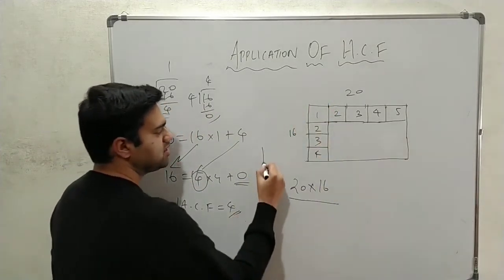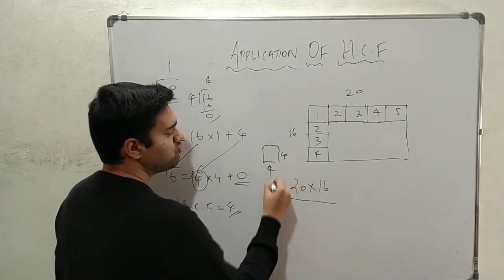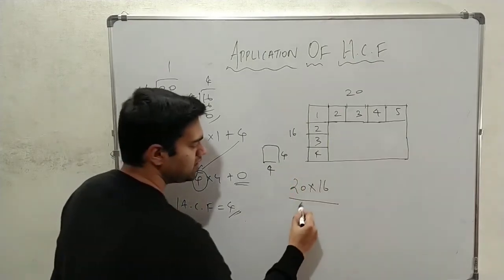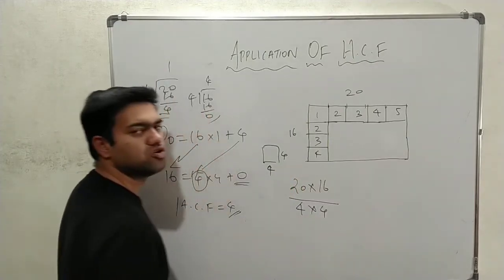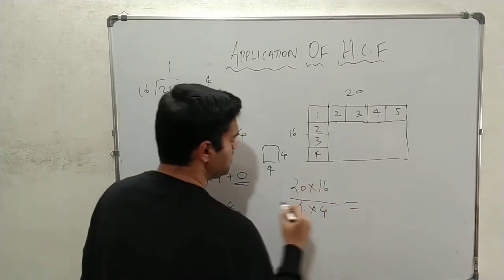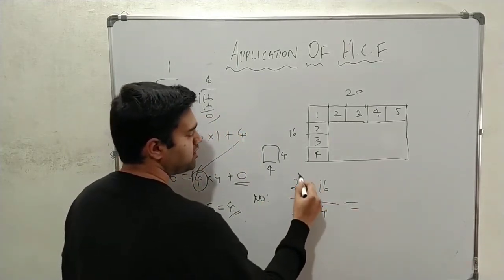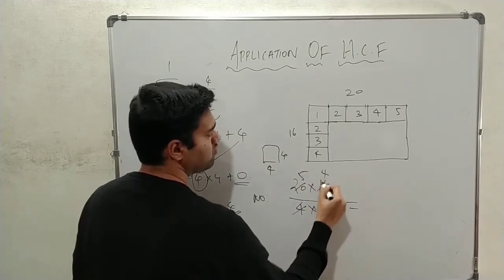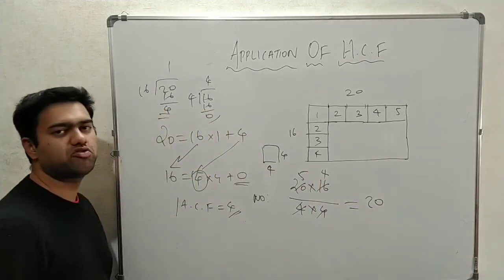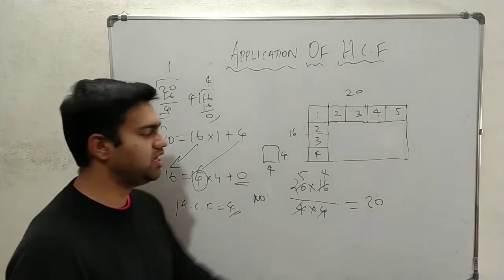Area of a single tile, it is a square of the dimension 4 by 4. So, this area is 4 into 4. If you divide the area, number of tiles will be cut. Here is 5, 4. 5, 4 is 20. So, total number of tiles required to fill this room is 20.